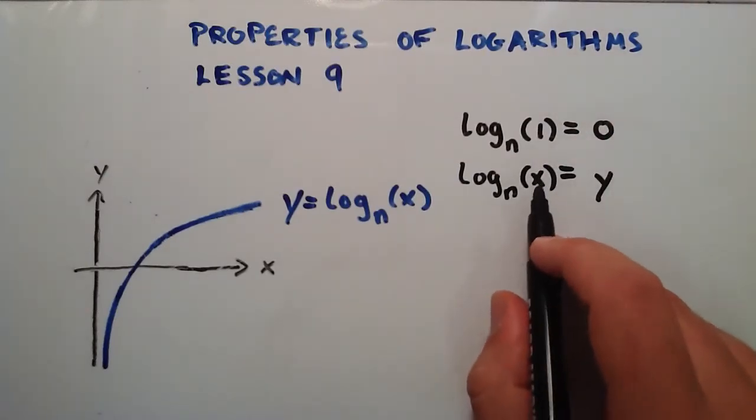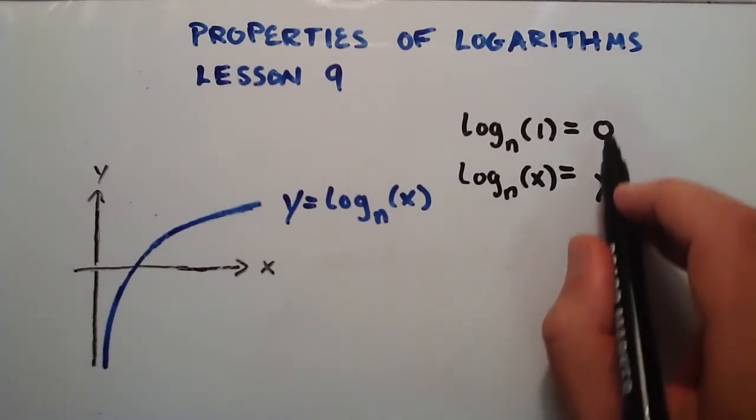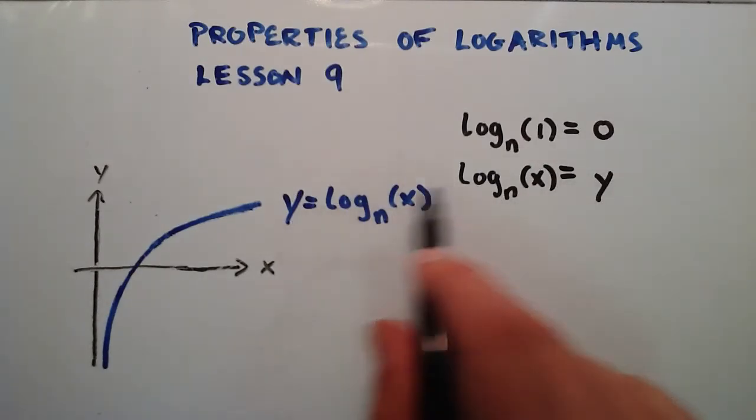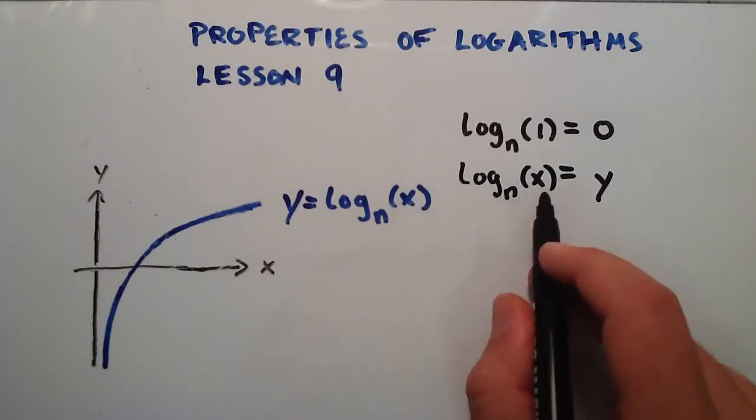So that's telling us that our x is the 1, and the y is the 0. It's the same thing as I have here, I've just flipped the y on the right side and the log base n of x on the left side.